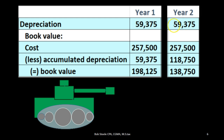In year two, we have the same depreciation expense as year one, but accumulated depreciation grows from $59,375 in year one plus another $59,375, totaling $118,750. Therefore the book value in year two is $257,500 minus $118,750, giving a book value of $138,750 — as opposed to year one, where the book value was $257,500 minus $59,375, equaling $198,125.